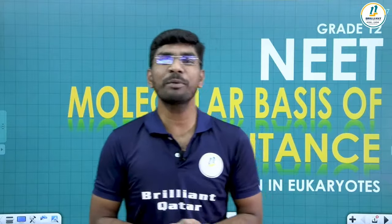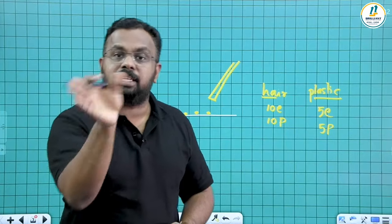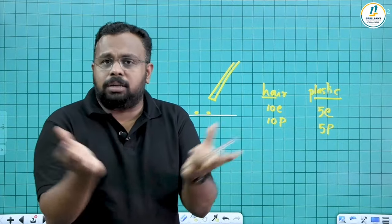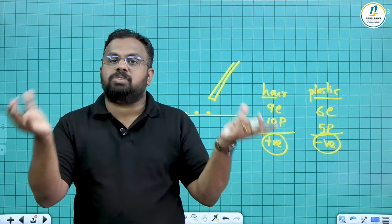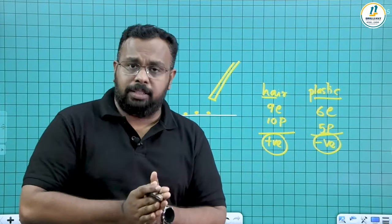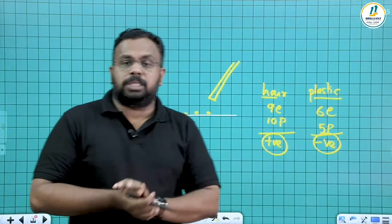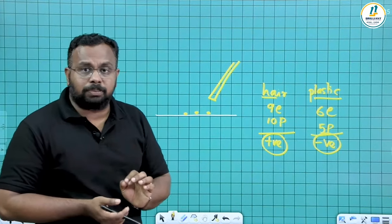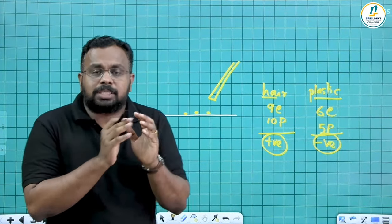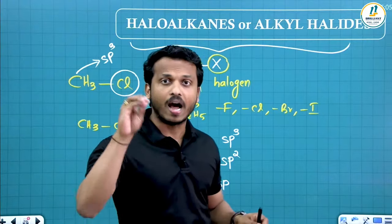Hi everyone, welcome to the amazing channel of Brilliant Kata. When you are rubbing one body with another body, electrons are transferred from one object to another object. This process — this type of electricity — is being given a name.